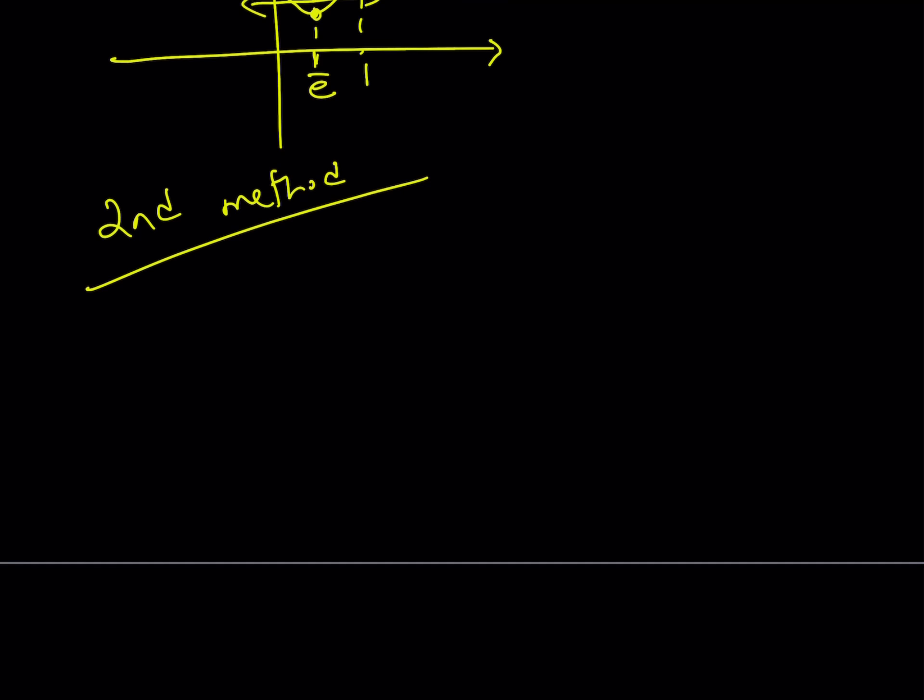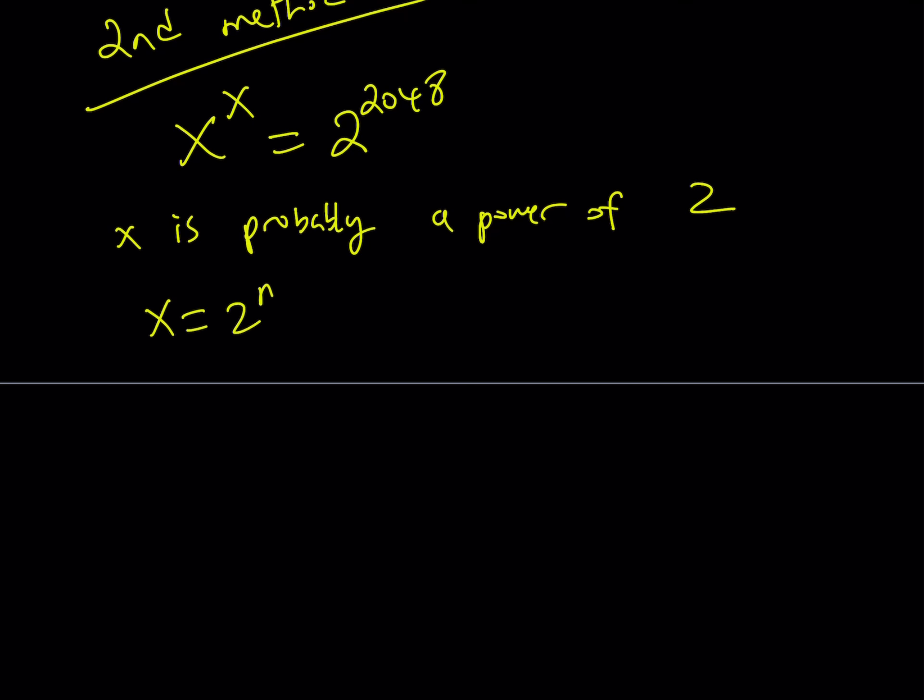The second method involves a different approach, slightly different approach. Since x to the power of x is a power of two, we're just assuming x is probably, and it's actually certainly, a power of two. Therefore, we can write it as x equals two to the power of n. Great. Let's see how that's going to help us. Replace x with two to the power of n everywhere, and then set it equal to this, obviously. So we're going to try to solve for n, but notice that n is an integer here, and we want it to be actually a positive integer. n is a positive integer, and we're going to try to solve for n here, as opposed to solving for x directly. Now, using the power rules, we get the following.